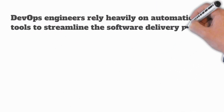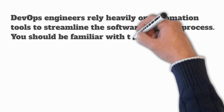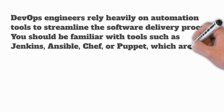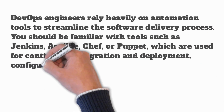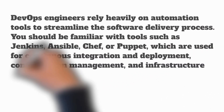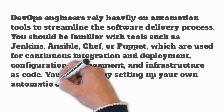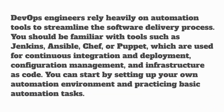DevOps engineers rely on automation tools nowadays. You should be familiar with tools such as Jenkins, Ansible, Chef, and Puppet. These automation tools help with continuous integration and deployment, configuration management, and infrastructure as code. You can start by setting up your own automation environment.